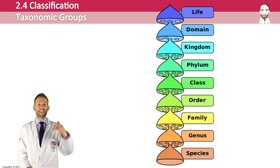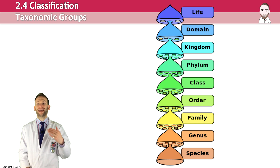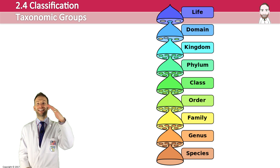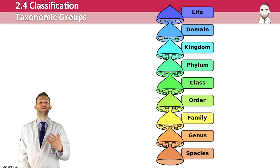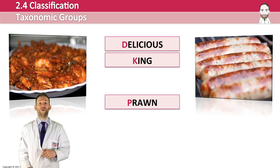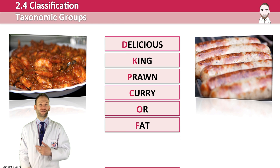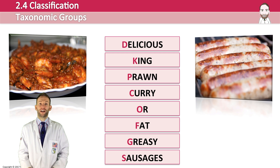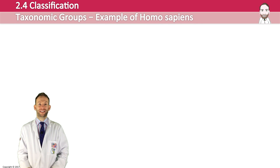Within the animal kingdom he split organisms into phyla — vertebrates and invertebrates — and carried on splitting into smaller and smaller groups until reaching the species level. The hierarchical structure goes: Domain, Kingdom, Phylum, Class, Order, Family, Genus, Species. An easy way to remember it is: 'Delicious King Prawn Curry Or Fat Greasy Sausages.'